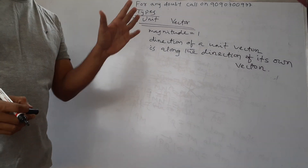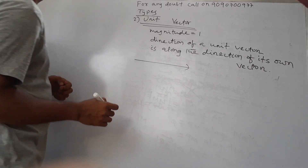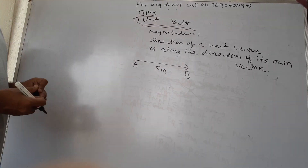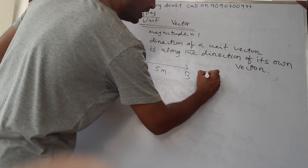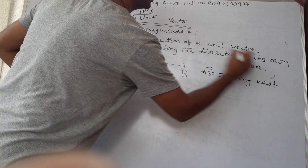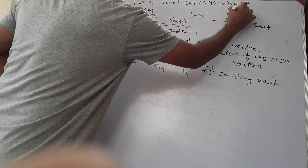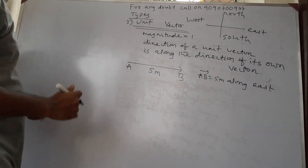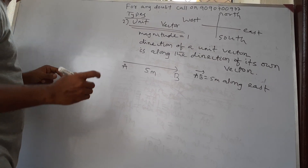Let me use the same example: vector AB is 5 meters along east. I can write vector AB equals 5 meters along east — recalling the diagram with east, west, north, and south. So the vector is 5 meters along east.